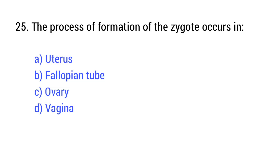Question number 25. The process of formation of the zygote occurs in? The right answer is option B: Fallopian tube.